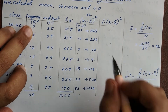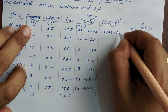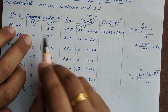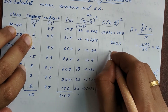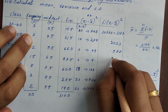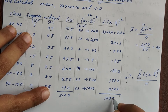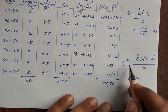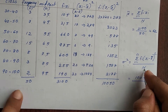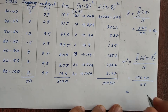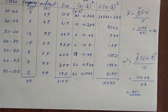Now we multiply frequency into the squared deviations. That is 3 into 729, which equals 2187. Then 7 into 289, which is 2023. We continue multiplying frequency into each squared deviation to build the fi·(xi − x̄)² column.